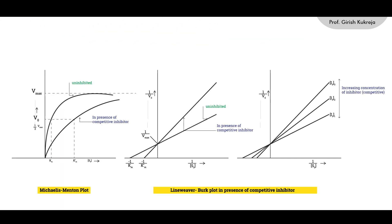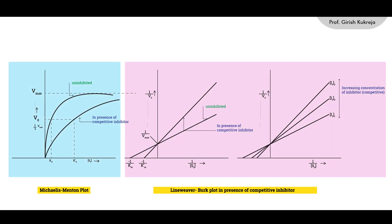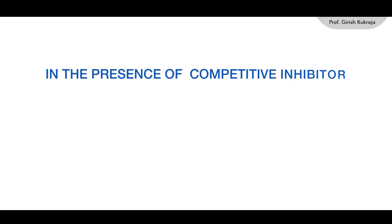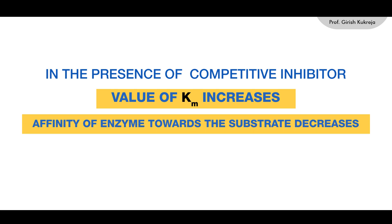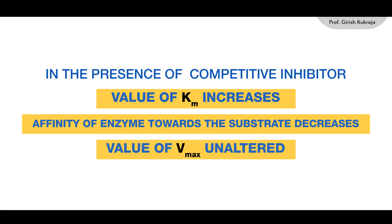This can also be seen from the following graphs. The normal Michaelis-Menten plot and the Lineweaver-Burk plot in the presence and absence of a typical competitive inhibitor both confirm that the value of Km increases — reflecting decreased affinity of the enzyme towards the substrate — while the value of Vmax remains unaltered. Thank you.